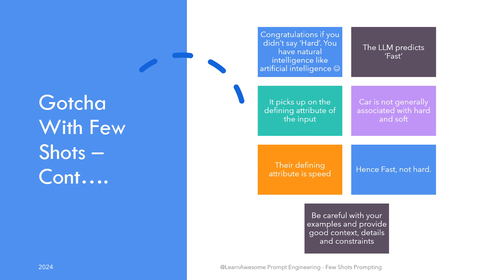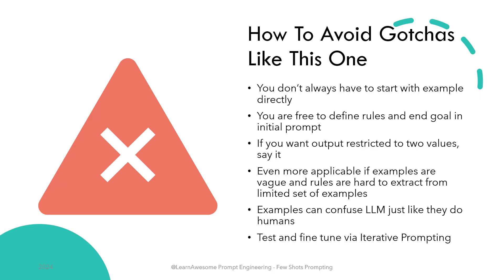The pattern never stops you from starting with the example directly. You are free to specify the rules and end goal in the initial prompt, telling the model what your end goal is. This is especially true if the examples are vague and rules might be hard to extract from the limited set of examples you are providing. The model would reason similar to how humans do, so if some examples can confuse certain humans, they can confuse the model as well. You may need to test and fine-tune the output if it deviates from your intended trajectory. You should get it right within a few iterations. You can check out the iterative prompting video on the channel to learn more about that technique.